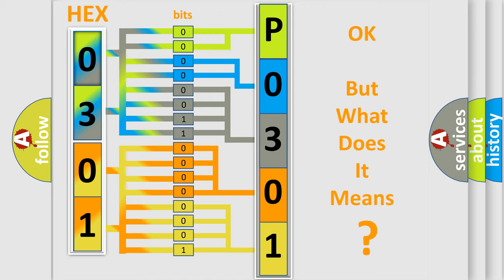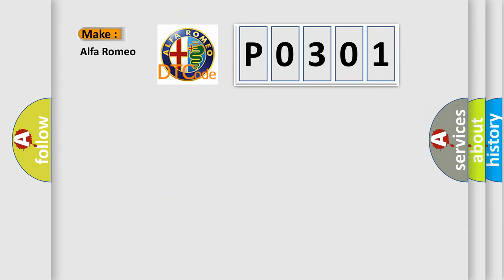The number itself does not make sense to us if we cannot assign information about what it actually expresses. So, what does the Diagnostic Trouble Code P0301 interpret specifically?